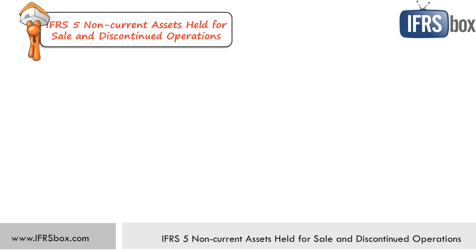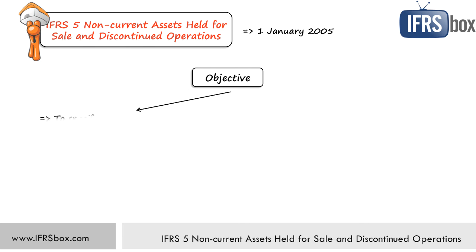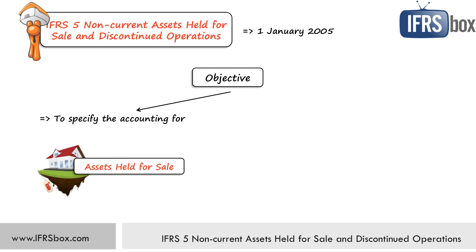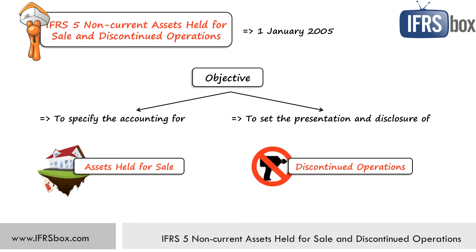The standard IFRS 5 was issued in 2004 and it's applicable for the period starting on or after 1st January 2005, but of course there were some minor changes as other standards developed. IFRS 5 focuses on two main areas: objective number one is to specify the accounting treatments for assets held for sale, and objective number two is to set the presentation and disclosure of discontinued operations. We will focus on each of these two areas separately.